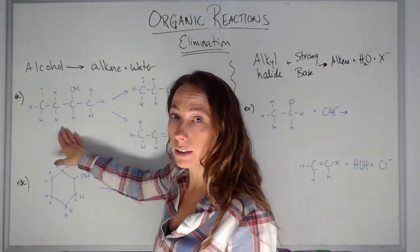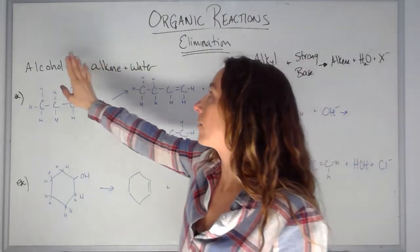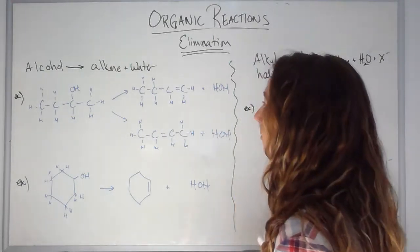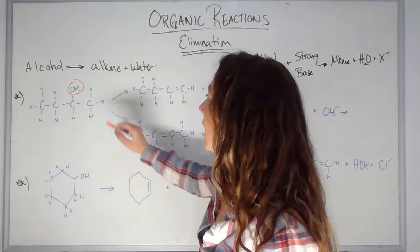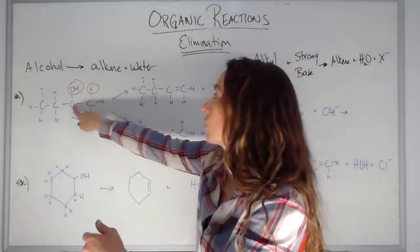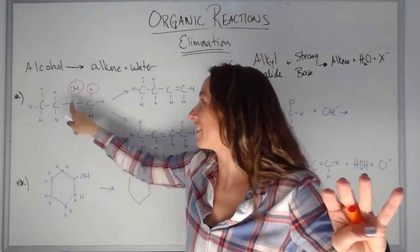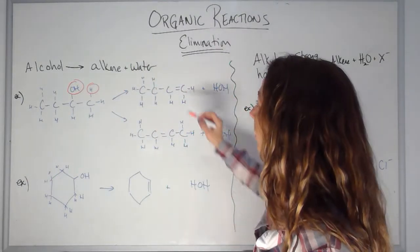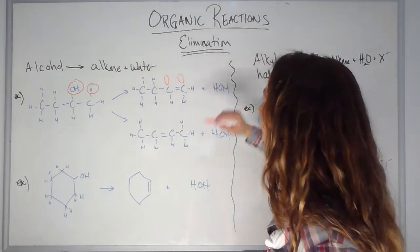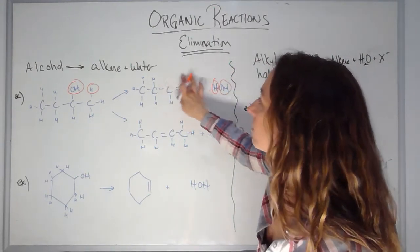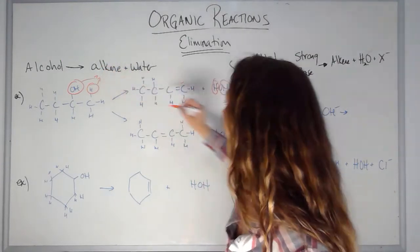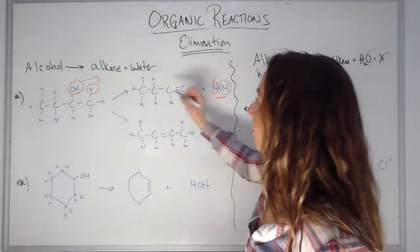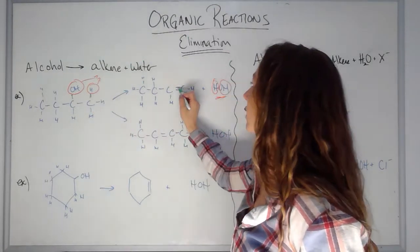Here I have an alcohol. This is the first type of elimination reaction: an alcohol leads to an alkene and water. I'm going to rip off the OH and also rip off a neighboring H. This carbon lets go of the OH to form the double bond, and the neighboring carbon lets go of the H to form the double bond. Those H and OH come together to make water, and these two carbons form the double bond because they're now each missing something.